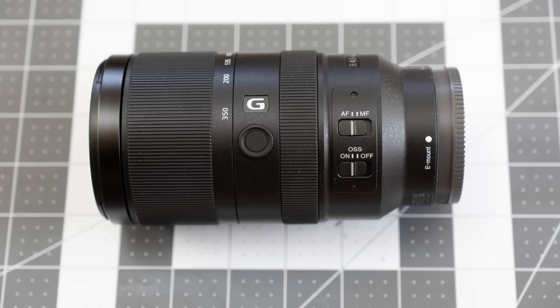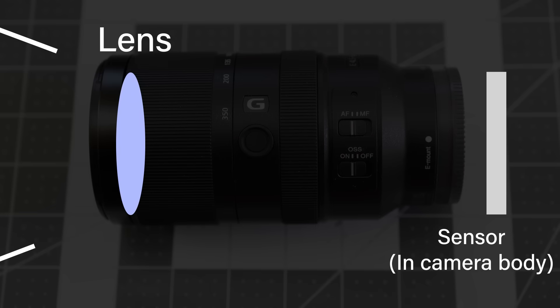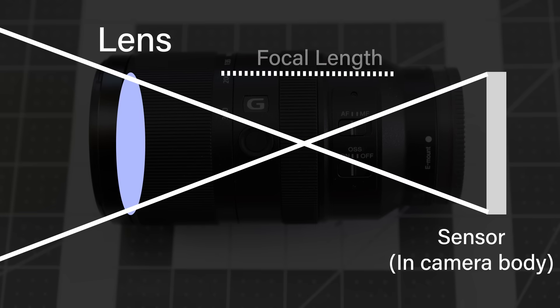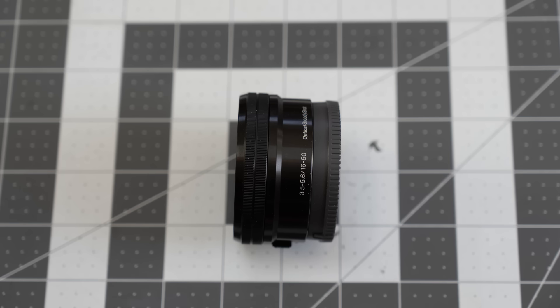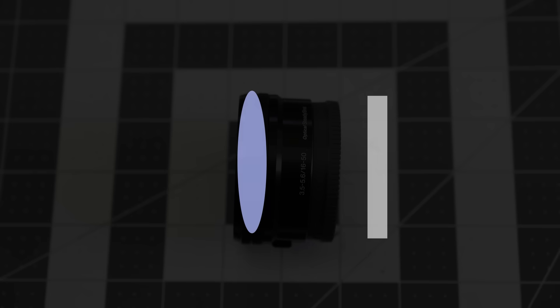First, a quick review on the mechanics of photography. A camera is a mechanism that uses a lens to concentrate light on a sensor which captures the image. The focal length is a distance between the two. A short lens is called a wide or wide-angle lens — it has a wide field of view, because the lens takes in light from a wide angle and focuses it onto the sensor.